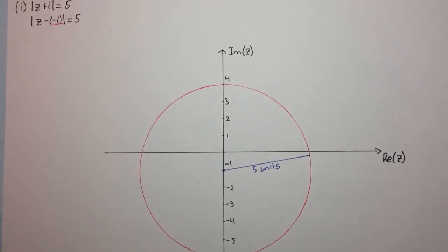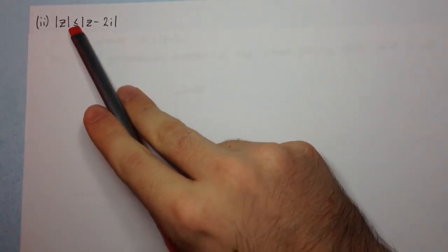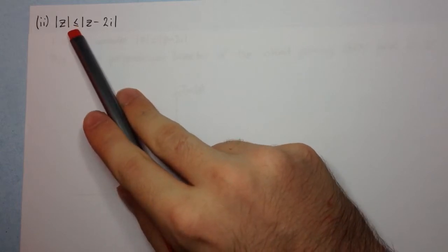Let's have a look at the second question now. This one says, the modulus of z is less than or equal to the modulus of z minus 2i. With these types of questions, when we have a less than or equal to or a greater than or equal to, when we have an inequality, the best thing to do is to first consider just the equality. So first we consider the modulus of z equal to the modulus of z minus 2i.